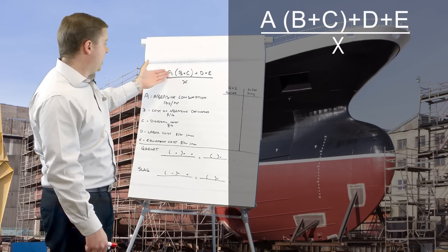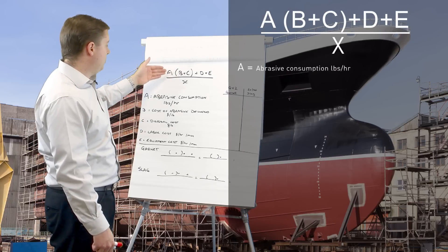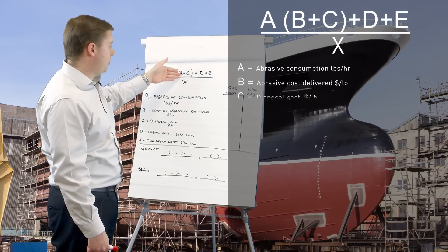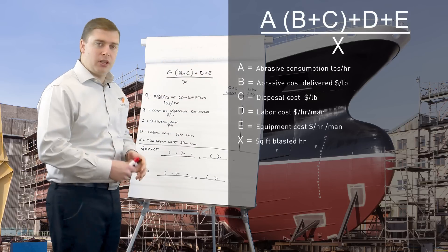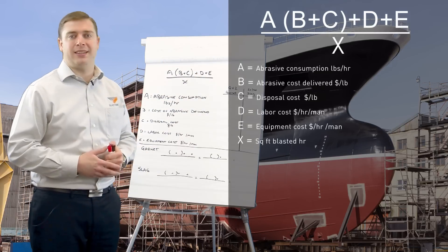So we have A times A which is the abrasive consumption times by the delivered cost of the abrasive plus the disposal cost at the labour and equipment divided by the speed of the abrasive. So I was at a customer's place this week.